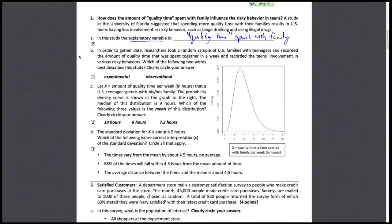In order to gather data, researchers took a random sample of U.S. families with teenagers and recorded the amount of quality time that was spent together in a week and recorded the teens' involvement in various risky behaviors. If we were to try to describe this study, there's no manipulation, no grouping of subjects. It's just simply observing the behavior and recording the two variables. So this here is an observational study.